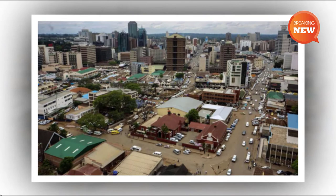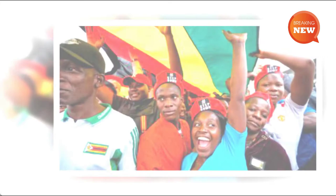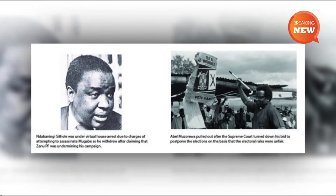Operation Murambatsvina was officially built to rid urban areas of illegal structures, illegal business enterprises, and criminal activities. In practice, its purpose was to punish political opponents. The UN estimates 700,000 people were left without jobs or homes as a result. Families and raiders, especially at the beginning of the operation, were often given no notice before police destroyed their homes and businesses.